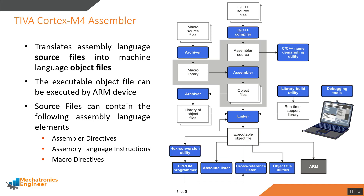Let's talk a little about the Cortex-M4 assembler. This shows the ARM software development flow and the shaded portion highlights the most common assembler development path. The assembler accepts assembly language source files — both those you create and those created by the ARM C/C++ compiler. The ARM assembler translates assembly language source files into machine language object files, and the linker creates executable object files from those object modules.